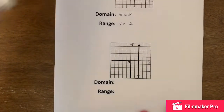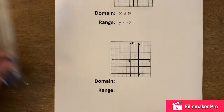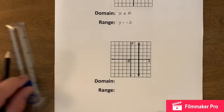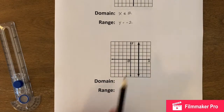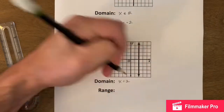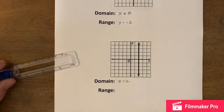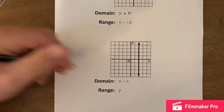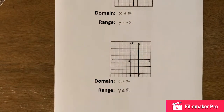Here we have a vertical line. Starting from the left: nothing, nothing, nothing — then there's my line. All of these points on this line all have the same x value of two, so x equals two for every single one of them. However, it is going to go up and down to infinity in both directions — arrow to arrow. So my range this time is all y — it's an element of the set of real numbers.